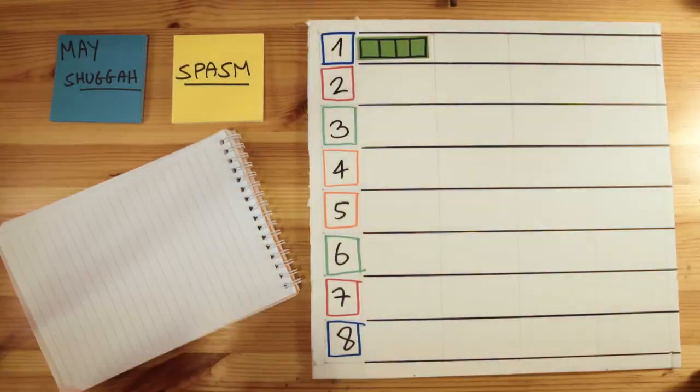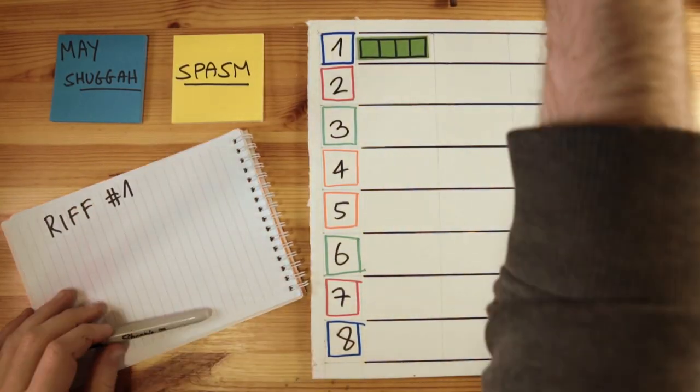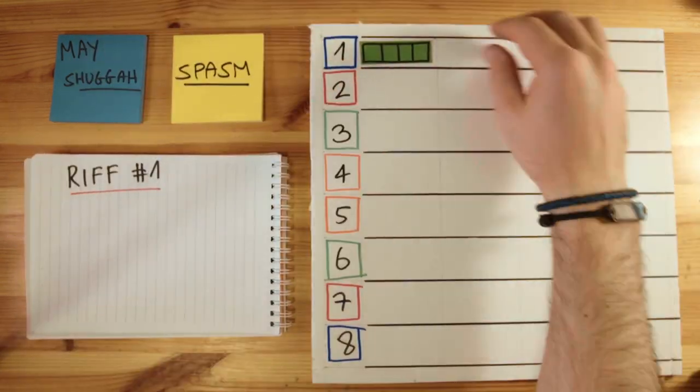Okay, the first riff, the intro riff, is a pattern in seven. The big seven, so seven of those main beats, quarter notes. And it looks like this.